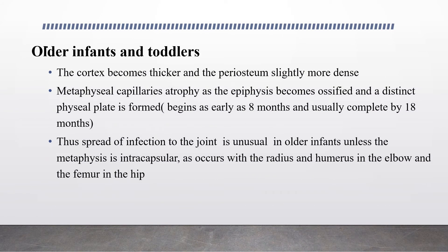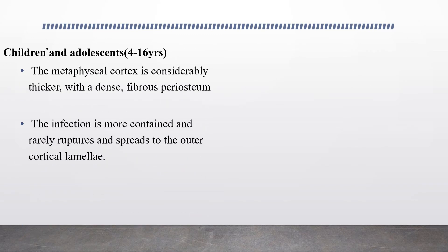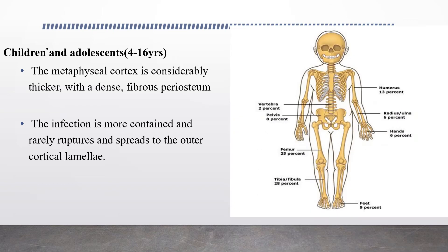In older infants and toddlers, the cortex becomes thicker and the periosteum is slightly more dense. The metaphyseal capillaries atrophy as the epiphysis becomes ossified and a distinct physeal plate is formed — mostly starting at 8 months and completed by 18 months. Spread of infection to the joint is unusual in older infants unless the metaphysis is intracapsular, as occurs with the radius and humerus at the elbow and the femur at the hip. In children and adolescents, the metaphyseal cortex is considerably thicker with a dense fibrous periosteum, and infection is more contained and rarely ruptures to the outer cortical lamella.